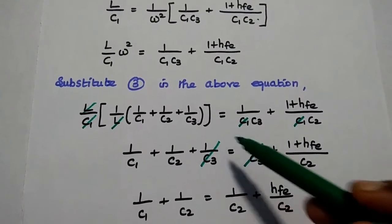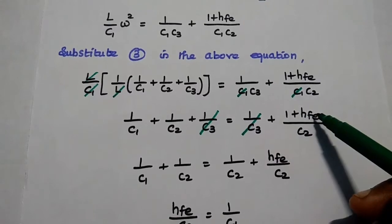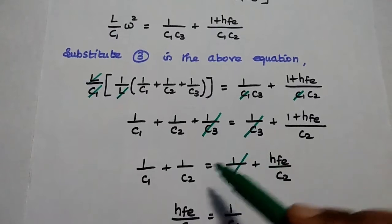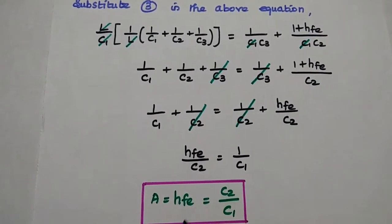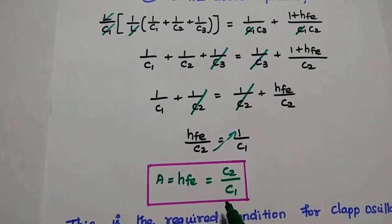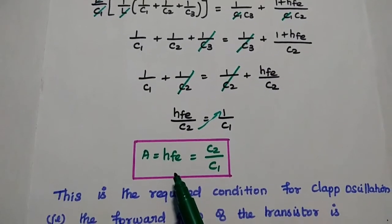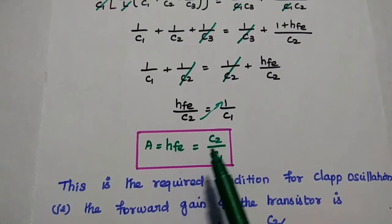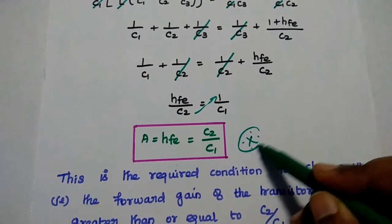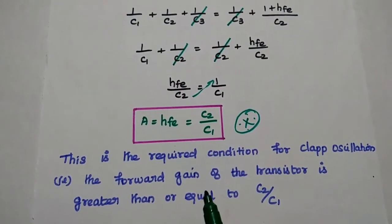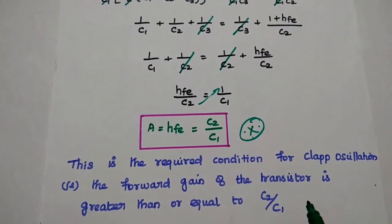Cancelling 1/C2 from both sides: 1/C1 = HFE/C2, which gives HFE = C2/C1. Here HFE is the forward gain of the transistor in the hybrid model, which is the forward gain of the amplifier circuit. Therefore, the condition for oscillation of the CLAP oscillator is A = HFE ≥ C2/C1, meaning the forward gain of the transistor must be at least equal to the ratio C2/C1 for sustained oscillation.